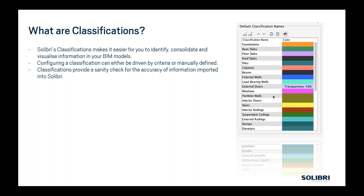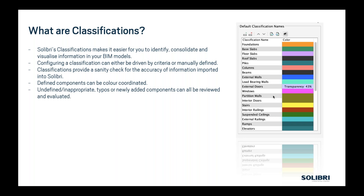Everything I'm talking about will hopefully be reinforced and become clearer by Ken's demonstration too. It's just going to be a sanity check, and what we're really looking for is the accuracy of all the data within these models. As you can see in the image, all of these components, once they're defined, can actually be color-coordinated. Anything that's maybe undefined, typos potentially with names or newly added components — classifications enable you to review, evaluate, and categorize them. The benefit is not just for the summary and visibility, but also for ease of use when working on rule sets and information takeoffs, whether delivering COBie or just wanting to take data out of the models.